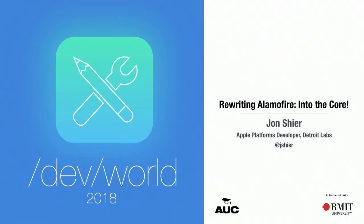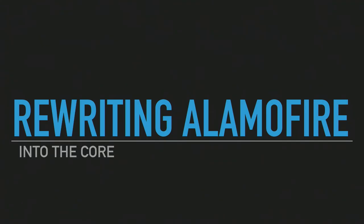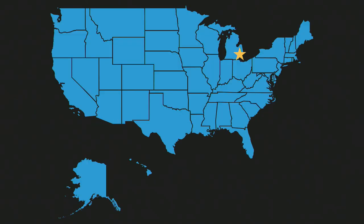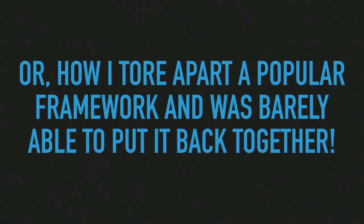My name is John Shire. I work for a company called Detroit Labs in Detroit, Michigan, which is here if you're unfamiliar with American geography. This talk is about rewriting Alamofire into the core, or how I took a popular framework and tore it apart and was barely able to put it back together.